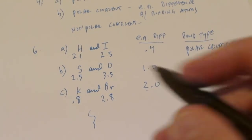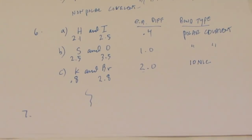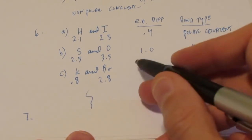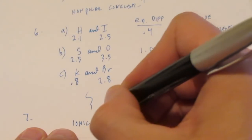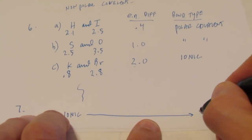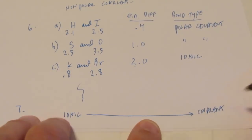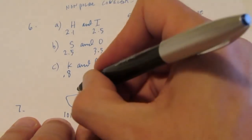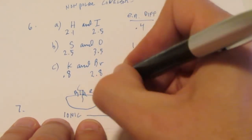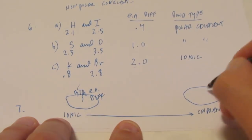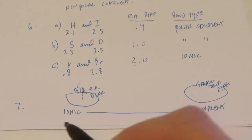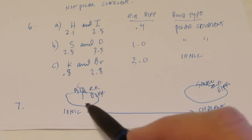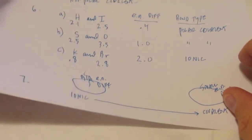Number 7 says, list the bonding pairs described in number 6 in order of increasing covalent character. So you're going to take these from above and you want to go in order of increasing covalent. So you want to put the most ionic first, and then the last one to be the most covalent. The way you do that is we have the big electronegativity difference here, and the most covalent we have as the small EN difference. So we're listing in order of increasing covalent character — most ionic to most covalent.